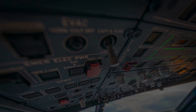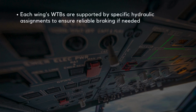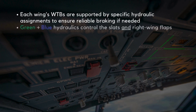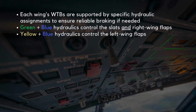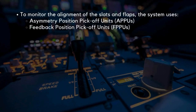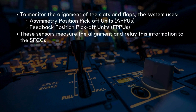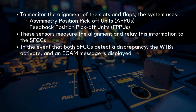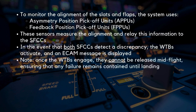Hydraulic redundancy plays a vital role in the wingtip brake protection system, especially in case of system failures. Each wing's wingtip brakes are supported by specific hydraulic assignments: the green and blue hydraulics control the slats and right-wing flaps, and the yellow and blue hydraulics control the left-wing flaps. To monitor the alignment of the slats and flaps, the system uses asymmetry position pick-off units and feedback position pick-off units. If both SFCCs detect a discrepancy, the wingtip brakes activate and an ECAM message is displayed in the cockpit. Importantly, once the wingtip brakes engage, they cannot be released mid-flight, ensuring any failure remains contained until landing.